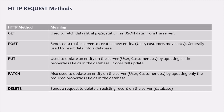We use the GET HTTP method to fetch or retrieve data from the server. The data that we are fetching from the server can be an HTML page or static files like images, CSS files, etc., or we can also fetch JSON data. In simple words, in order to retrieve or fetch data from the server, we use the GET method.